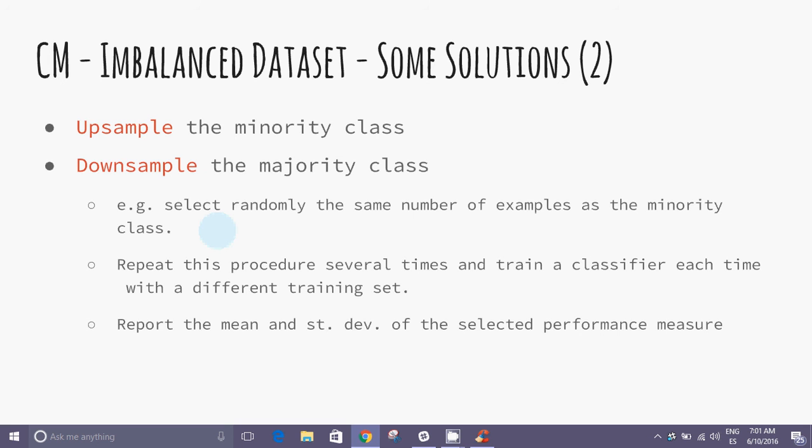We can also upsample the minority class or downsample the majority class by selecting randomly the same number of examples as the minority class. Repeat this procedure several times, reclassify each time with different datasets, and report the mean and standard deviation of the selected performance measures.